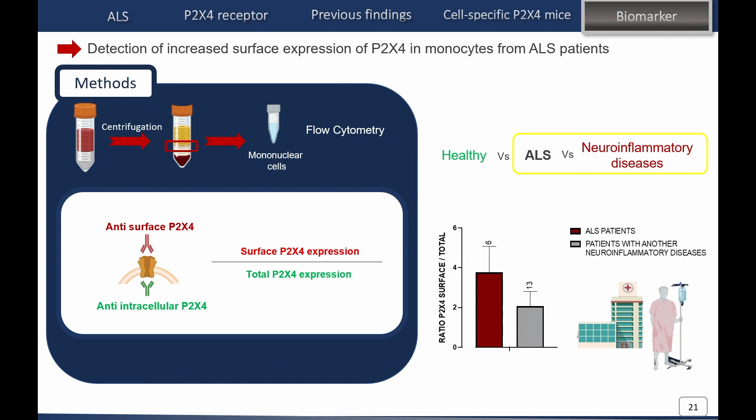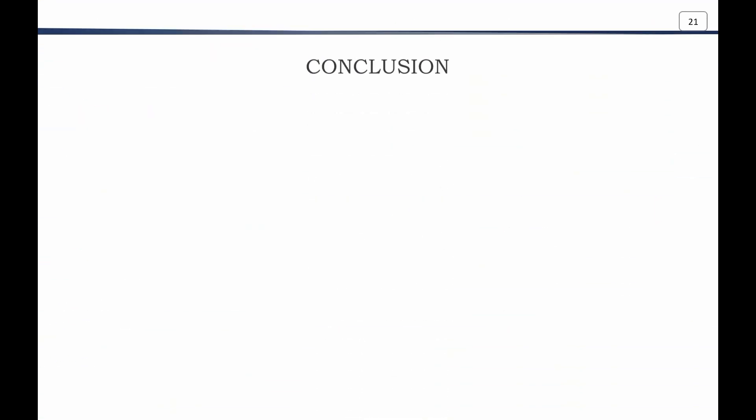This is just preliminary data, but P2X4 appears to be specifically increased at the surface of monocytes from ALS patients compared to patients with other neuroinflammatory diseases. However, we need more patients and more healthy controls in order to determine whether P2X4 can be used as a biomarker.